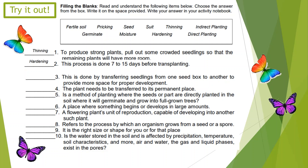Number 3: This is done by transferring seedlings from one seed box to another to provide more space for proper development. The correct answer is pricking.